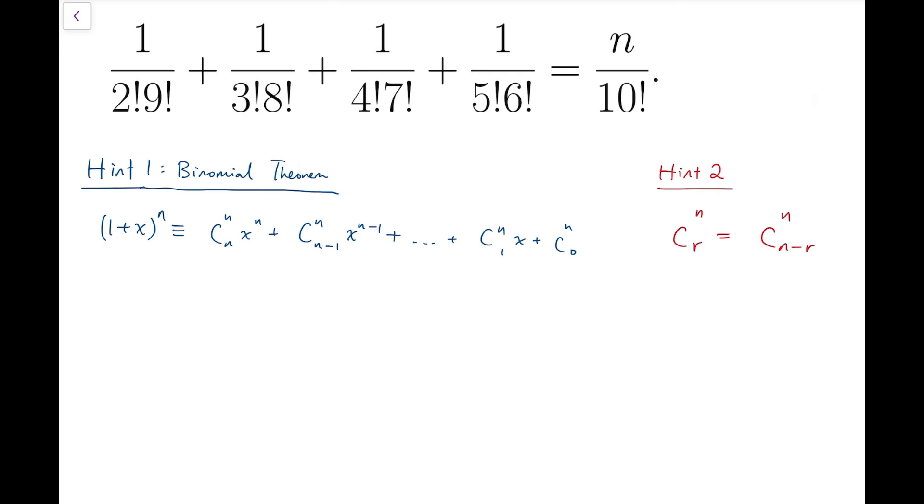then we can express that as the sum of some binomial coefficients, like n choose n minus 1, or n choose 1, multiplying by powers of x. Now in particular,